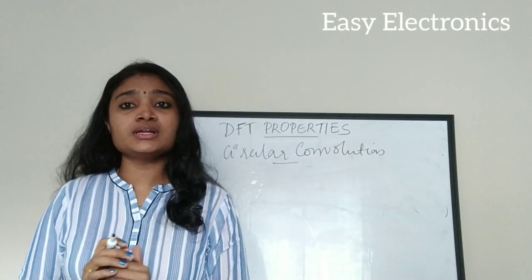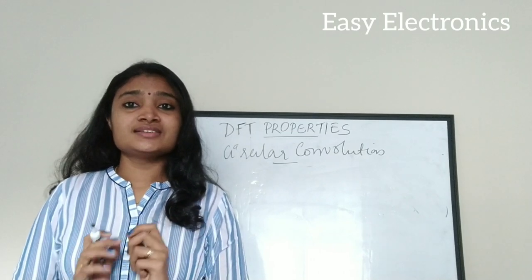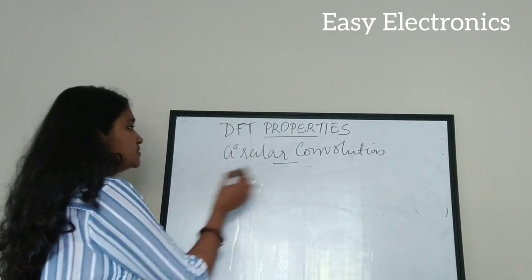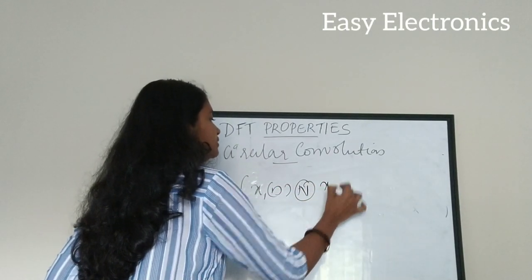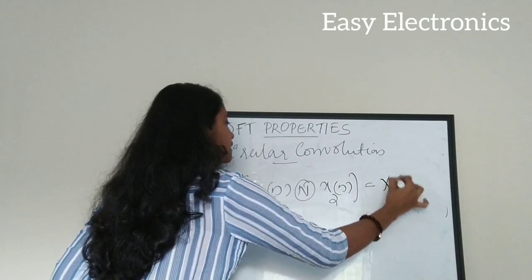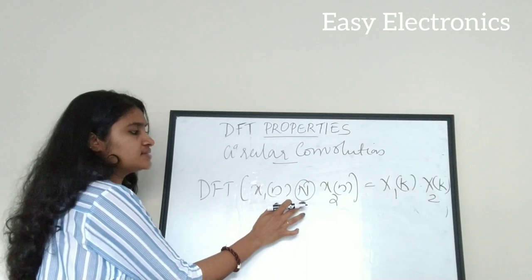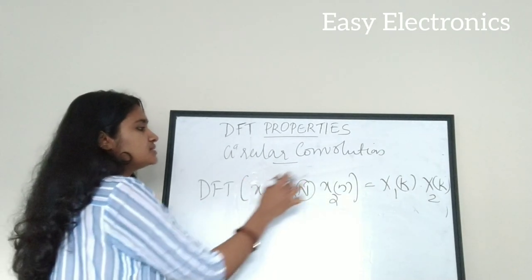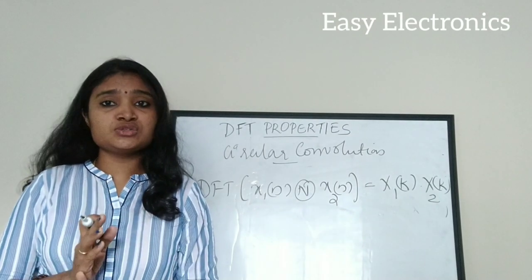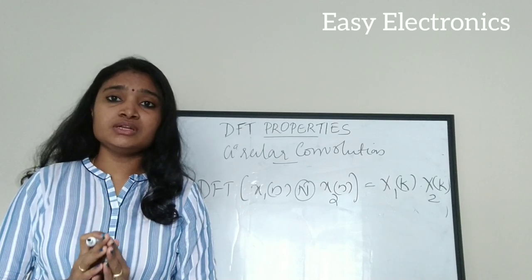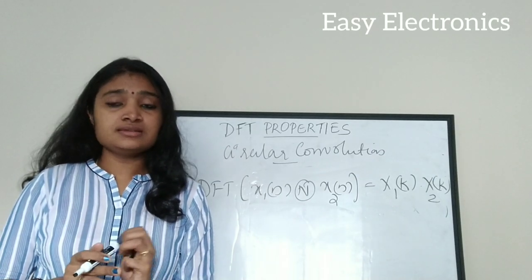The next property is the circular convolution property — a very important one, with many problems asked in university exams based on it. According to this property, the DFT of the circular convolution of x1(n) and x2(n) equals X1(k) multiplied by X2(k). That is, circular convolution in the time domain corresponds to multiplication of the individual DFTs.